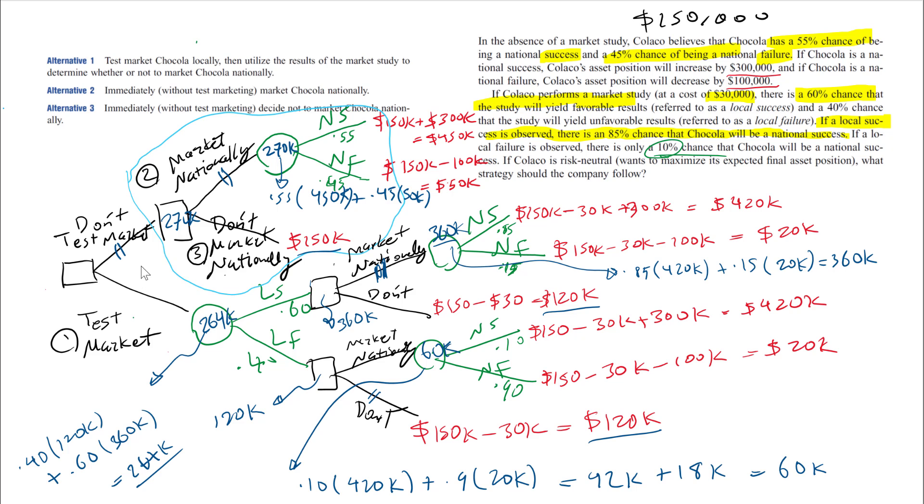It says basically don't do the test marketing, don't go through the sampling. Don't do the local marketing and do the marketing nationally. Based on all of these probabilities and calculations, this one gives you the highest expected value.